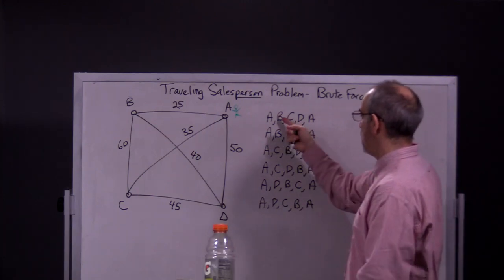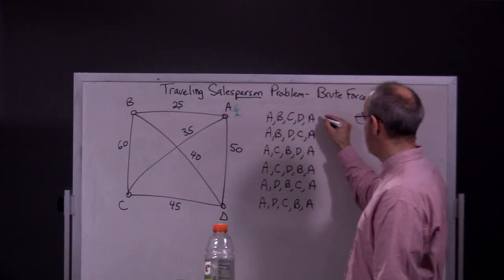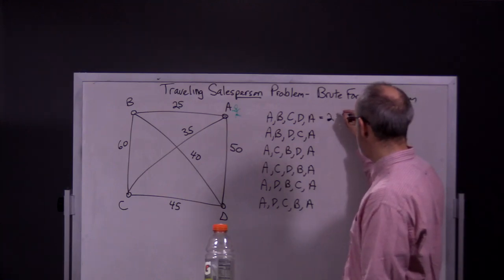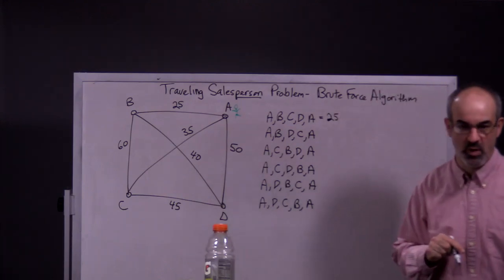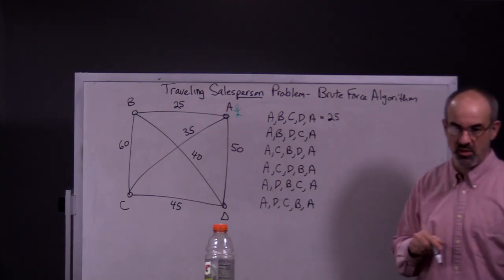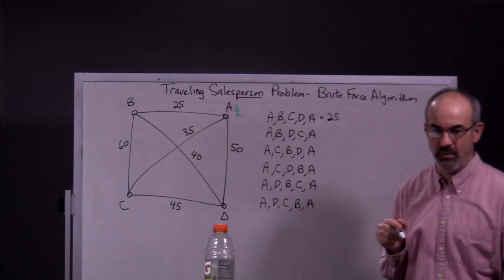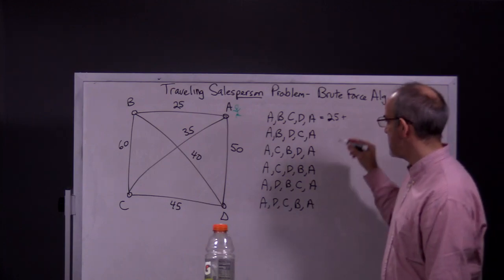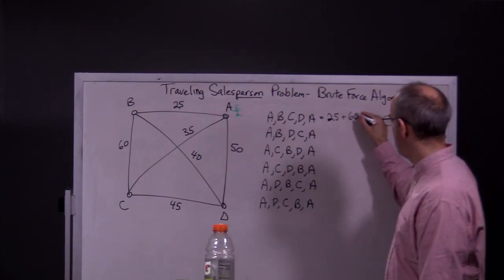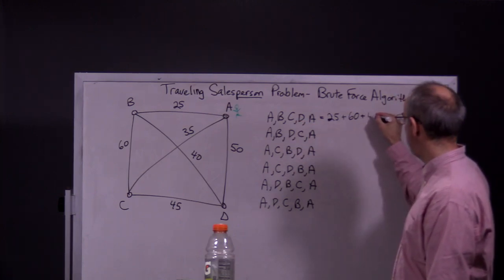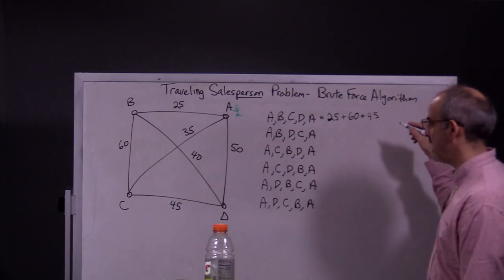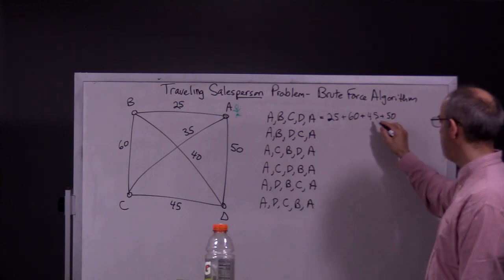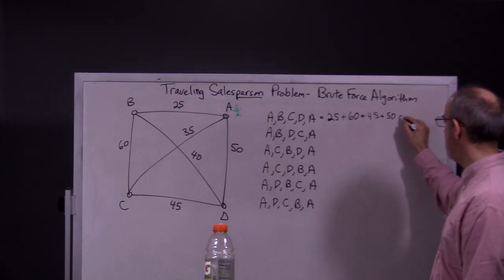Well, in the first route that I could take, we're going from A to B, which is 25. I'm not going to label these numbers. This could mean that it's 25 miles from A to B. It could mean that it costs $25 for whatever reason to go from A to B, or it could be even something else. So, B to C is 60. C to D is 45. And then D back to A is 50. So, we have 85, 130, 180.